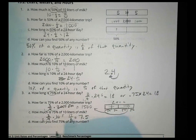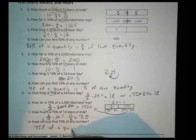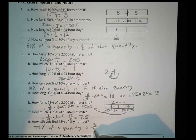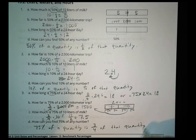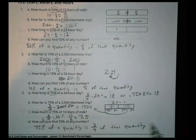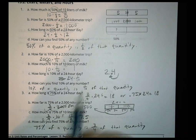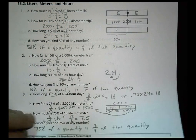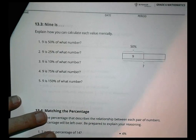So how can I find 75% of a number? 75% of a quantity is 3 fourths of that quantity. So it's the same pattern: 50% of a quantity is half of it, 10% of a quantity is 1 tenth of it, and 75% of a quantity is 3 fourths of it. All right, so let's take a look at activity three, where it says, explain how you can calculate each value mentally.